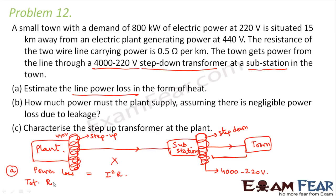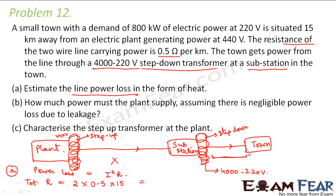First let us calculate the total resistance of the wires from substation to town. The problem says the resistance of the two wire line is 0.5 ohms per kilometer. Since there are two wires, it gets multiplied: 2 × 0.5 ohms/km, and the distance is 15 kilometers. So the total resistance of the wires equals 15 ohms.